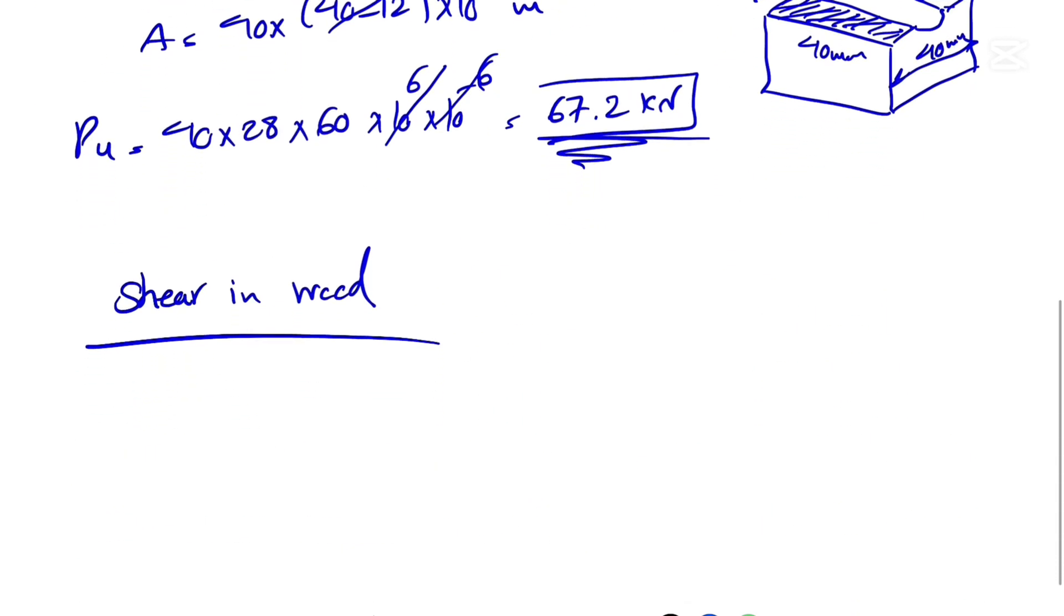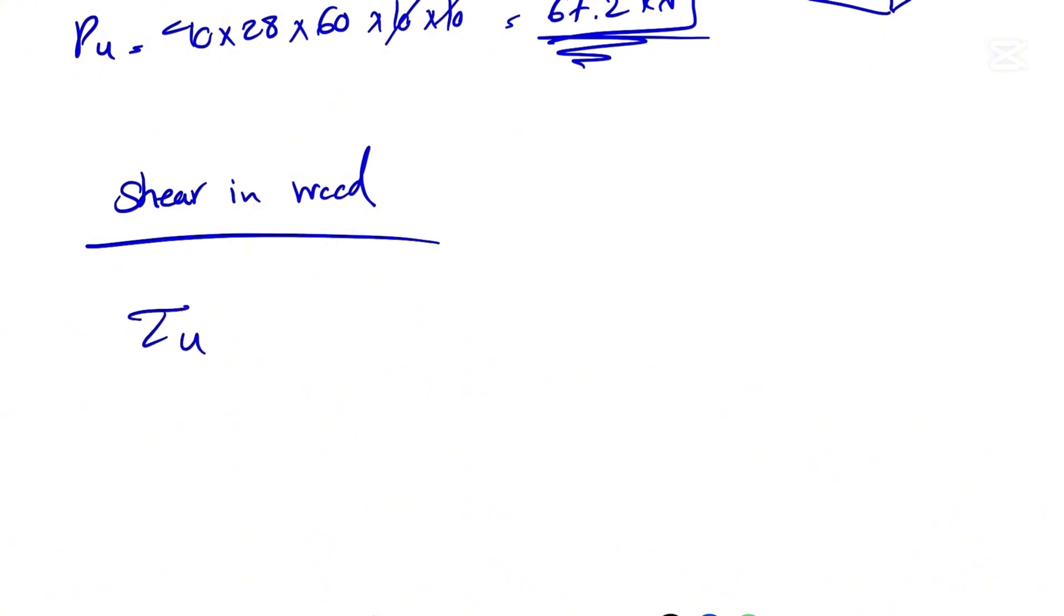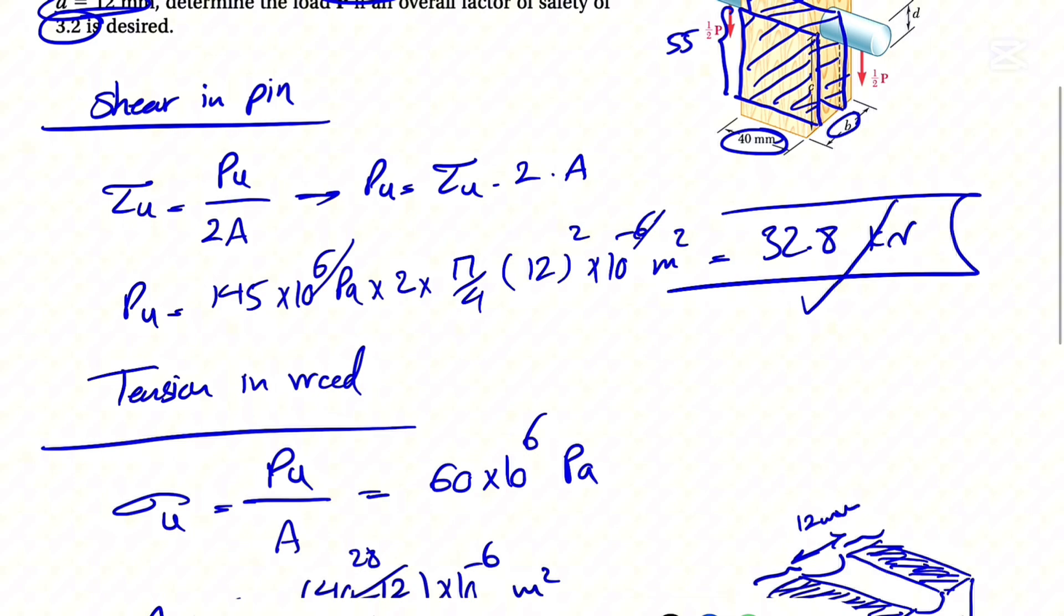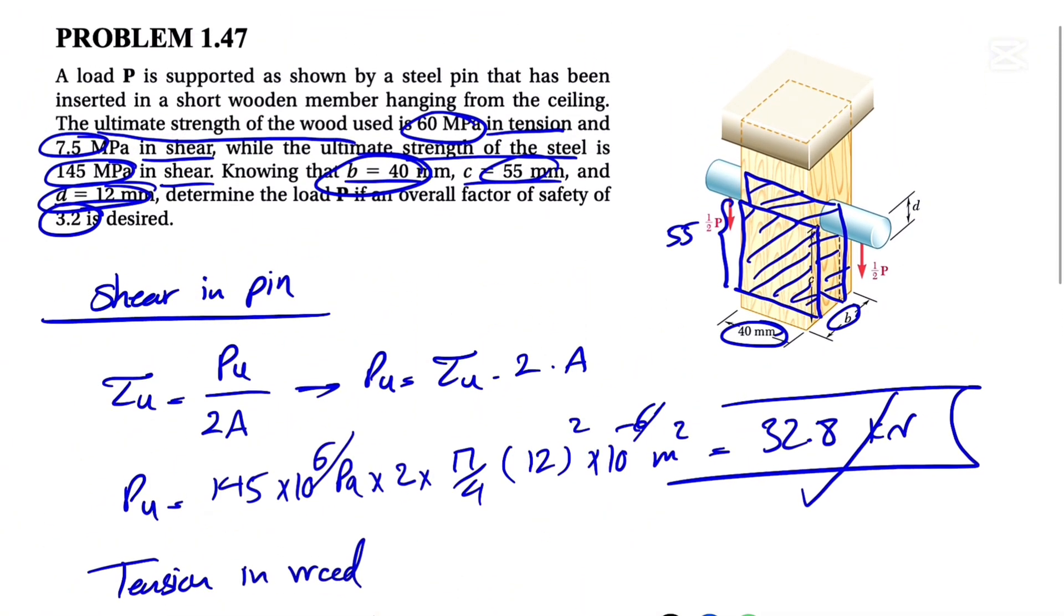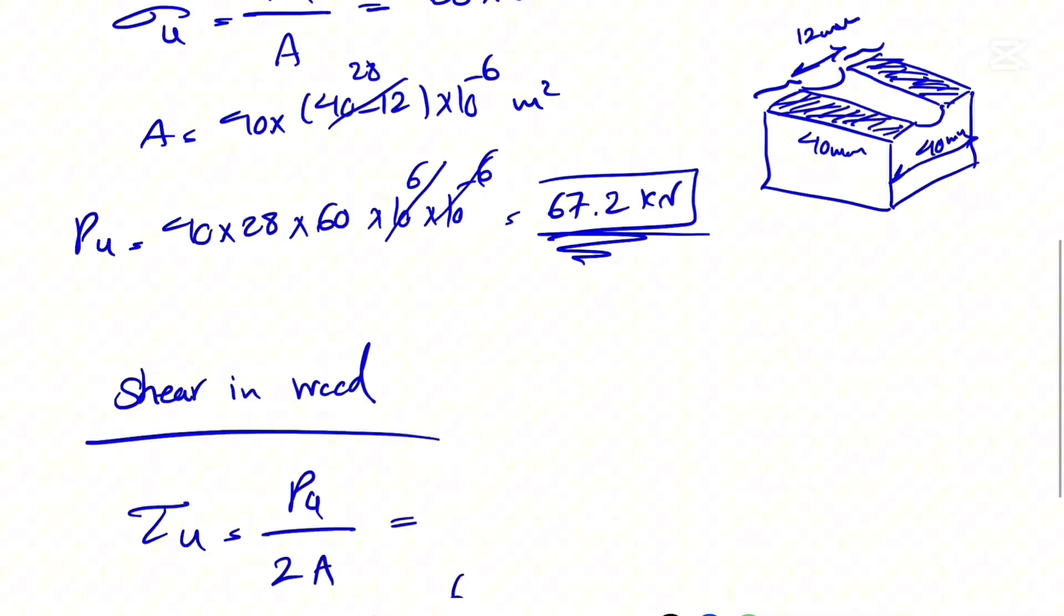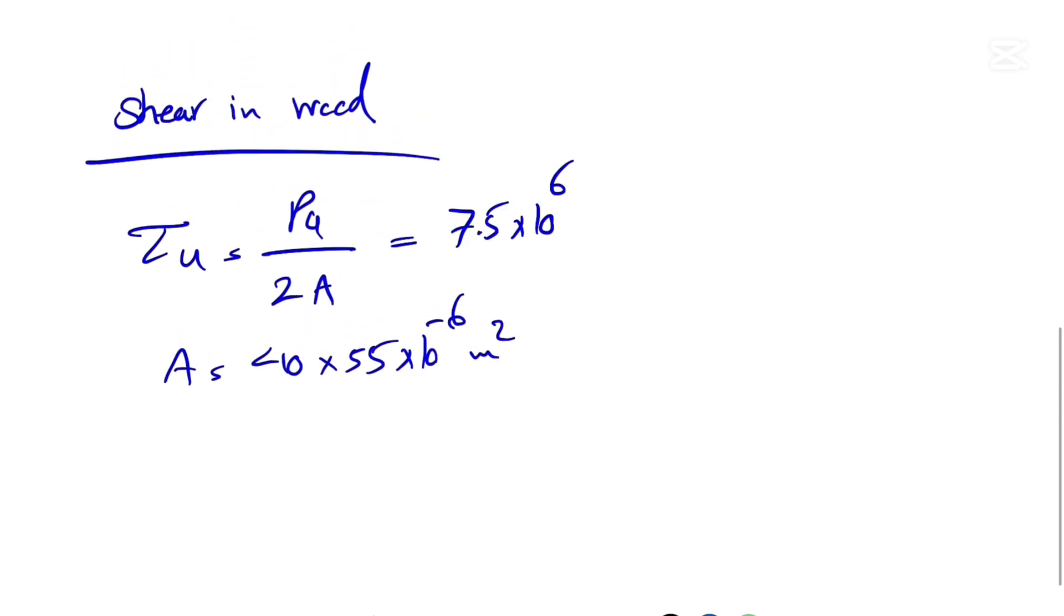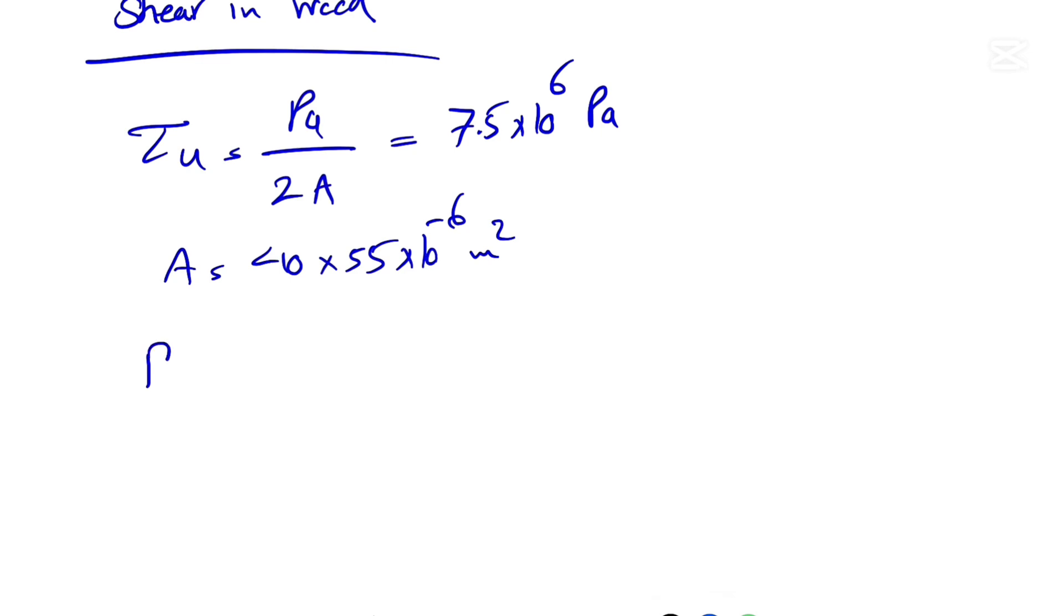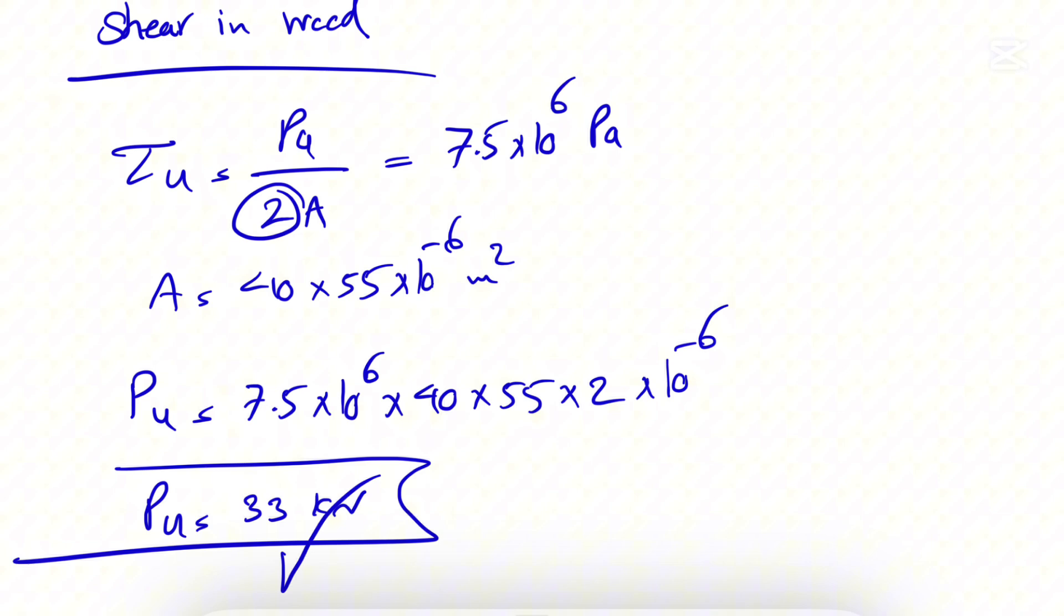We can call each of them A, so we have shear: Pu over 2A. Our A would be the area of the rectangle, which is 40 times 55 times 10^-6 meters squared. This will be equal to the shear that we have for wood, which is 7.5 megapascals, so 7.5 times 10^6 pascals. Let's figure out our P from this one.